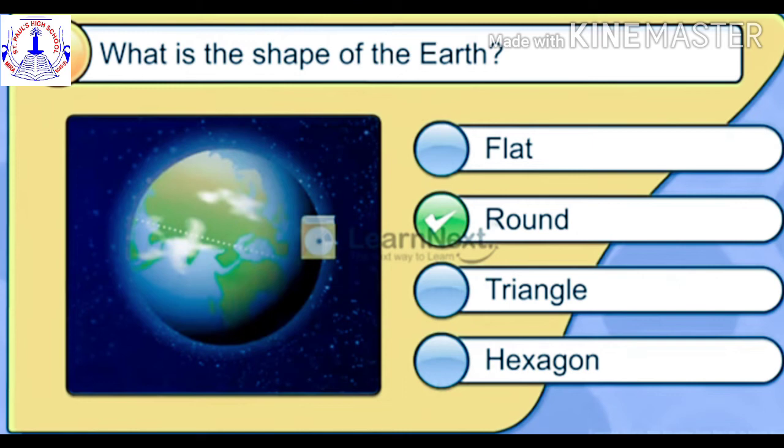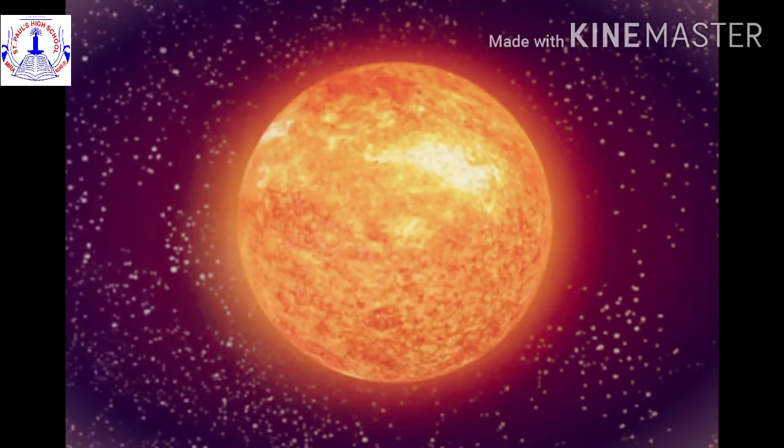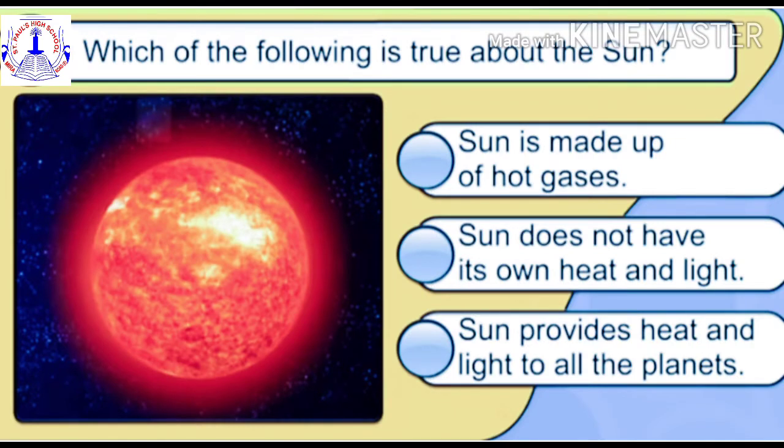Right, the shape of the Earth is round. Children, we have already learned about the sun, so let's answer this question: which of the following is true about the sun? Here you have to choose the correct option. So children, which is the correct option here?